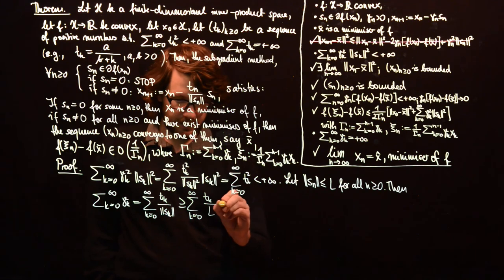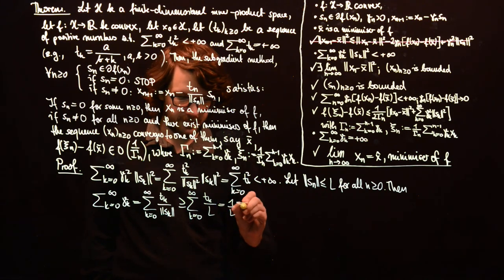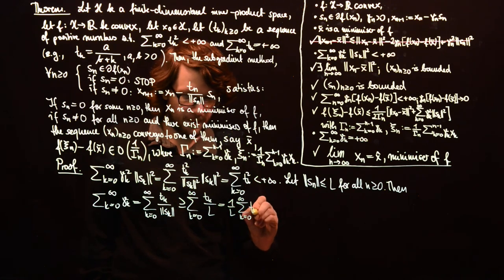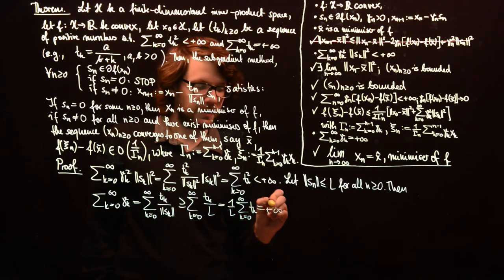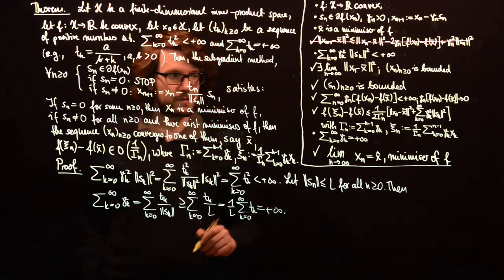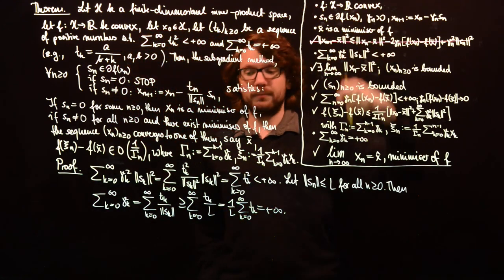And this is obviously 1 over L times the sum of t_k, and the sum of t_k is plus infinity. So we have proven all our bullet points here.